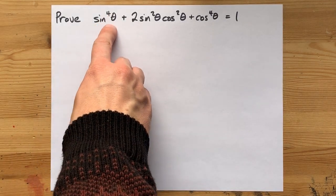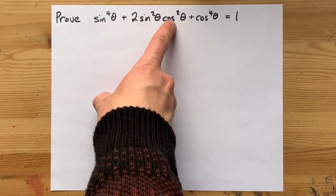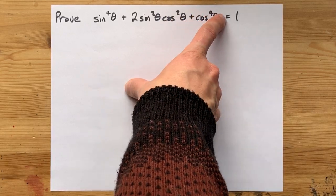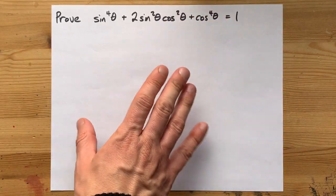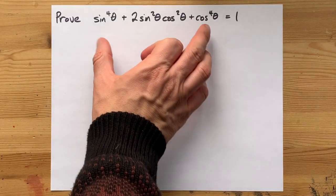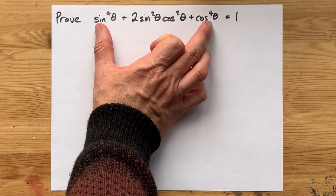To prove that sin^4θ + 2sin²θcos²θ + cos^4θ = 1, the thing I really want you to be able to see is that this equation is factorable.